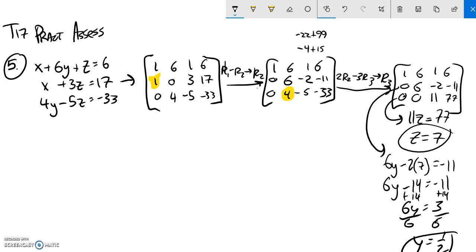So I know Y. I know Z. I'm going to plug them both into this equation. 1X plus 6Y. Y is 1 half. Plus 1Z. 1Z. Which is a 7. Equal 6.